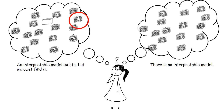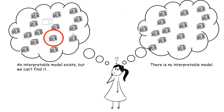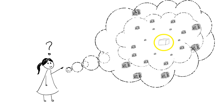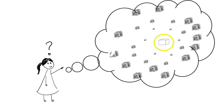But how do you know which it is? Is it that no accurate yet interpretable model exists, or that your algorithm just couldn't find it? Maybe an accurate yet interpretable model actually does exist? Luckily, as it turns out, to construct some kinds of models — and in particular rule lists — the part of the space we need to search isn't as large as it seems.